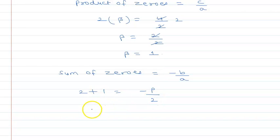2 + 1 is 3, and this is equal to -p/2, so 3 × 2 is 6, so p will be equal to -6.